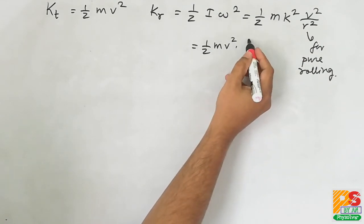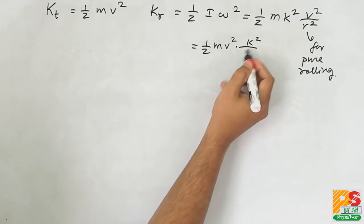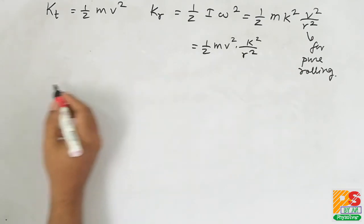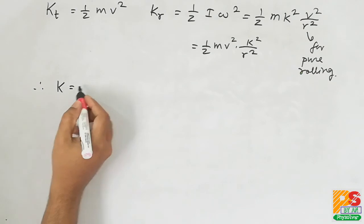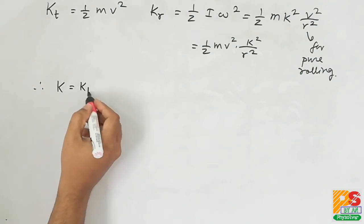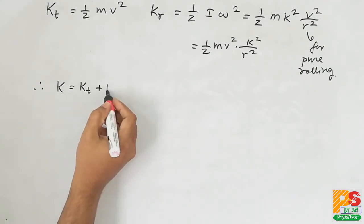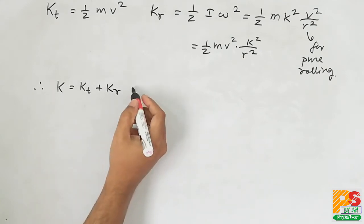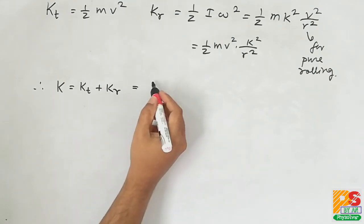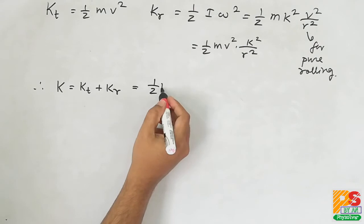Therefore, total kinetic energy is KT plus KR, taking half mv square common.